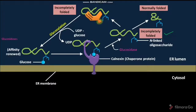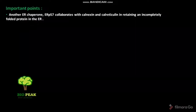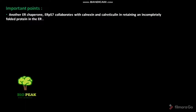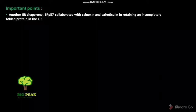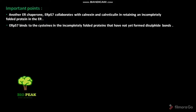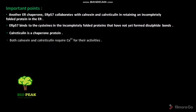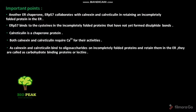The completely folded protein then exits the ER. Some important points: another ER chaperone, ERP57, collaborates with calnexin and calreticulin in retaining an incompletely folded protein in the ER. ERP57 binds to the cysteines in the incompletely folded protein that have not yet formed disulfide bonds. Calreticulin is also a chaperone protein. Both calnexin and calreticulin require Ca2+ for their activities. Since calnexin and calreticulin bind to oligosaccharides on incompletely folded proteins to retain them in the ER, they are called carbohydrate-binding proteins or lectins.